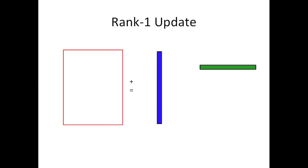Let's recall what a rank-one update is. A rank-one update is an outer product of a column vector multiplying a row vector, and if that then updates a matrix as opposed to just computing the matrix, we call this a rank-one update. Why we call it a rank-one update is something we're going to see later in the course.